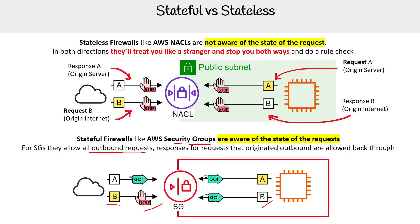If you want to know, this little icon for security groups doesn't actually exist — I made it because security groups don't have an icon, but I wanted to make a good representation. If you look carefully at the NACL icon, it has these two lines and arrows pointing in, showing they stop traffic both ways. The one I made shows it only checks on entering, for this one specific use case.